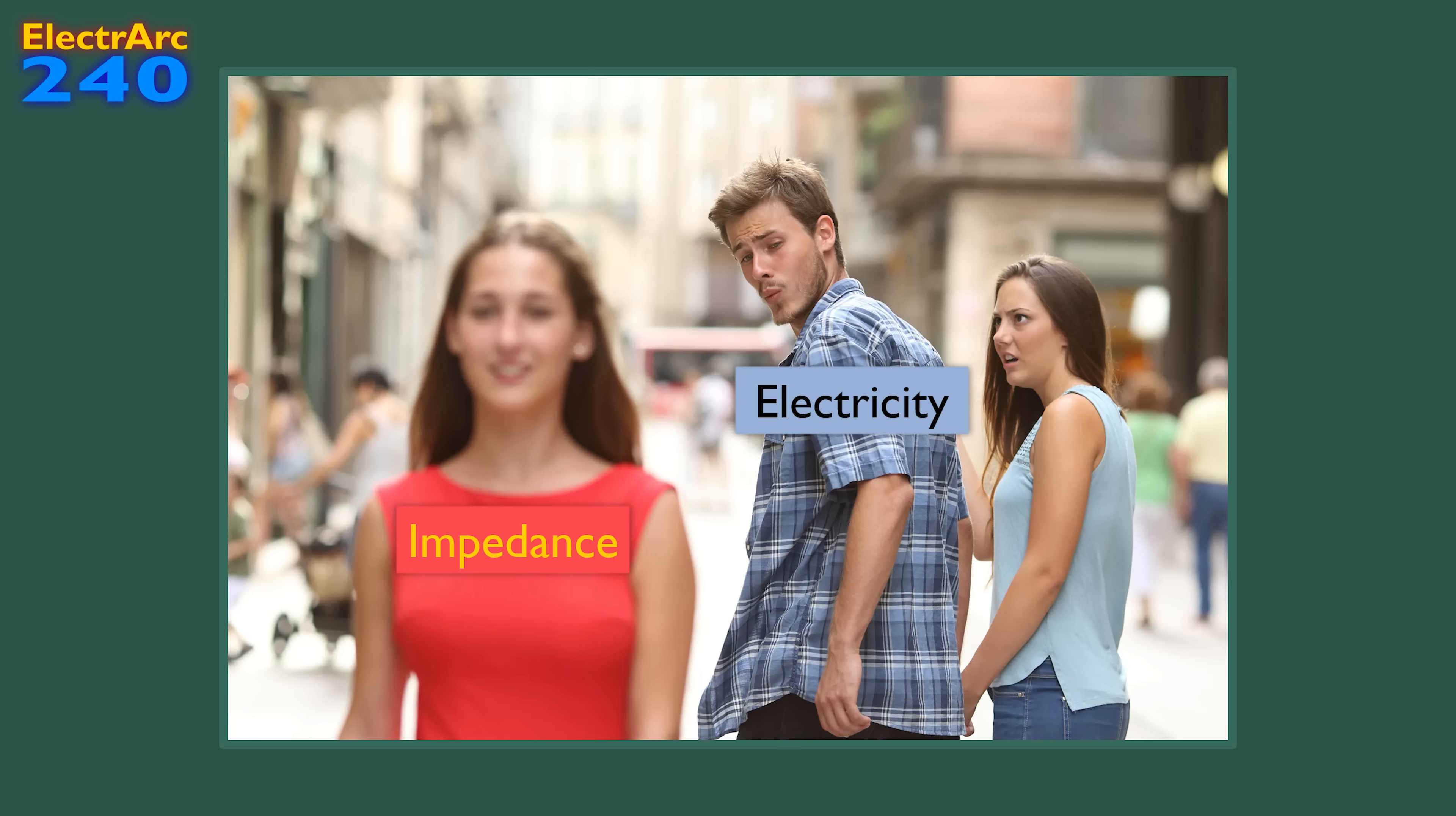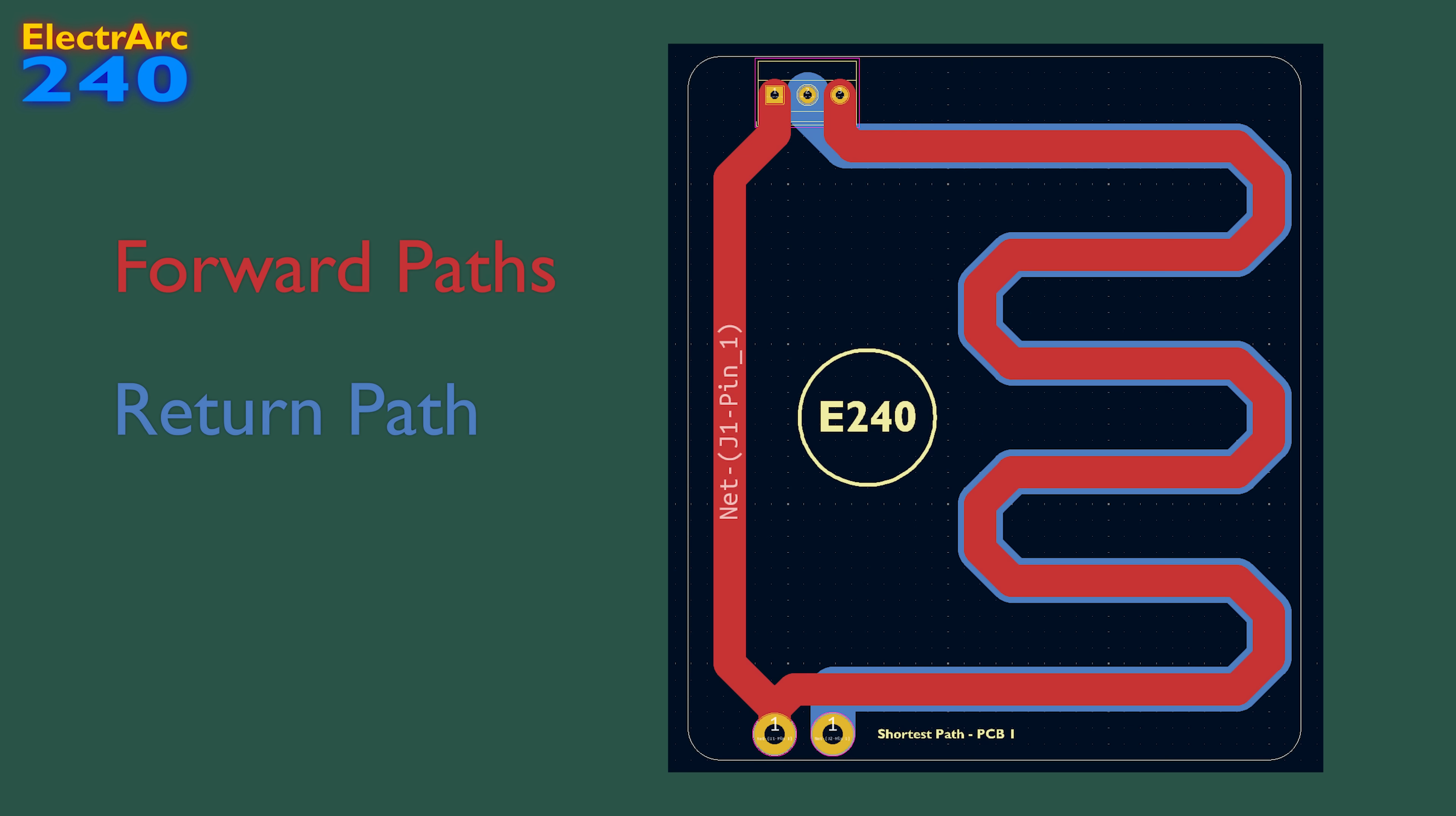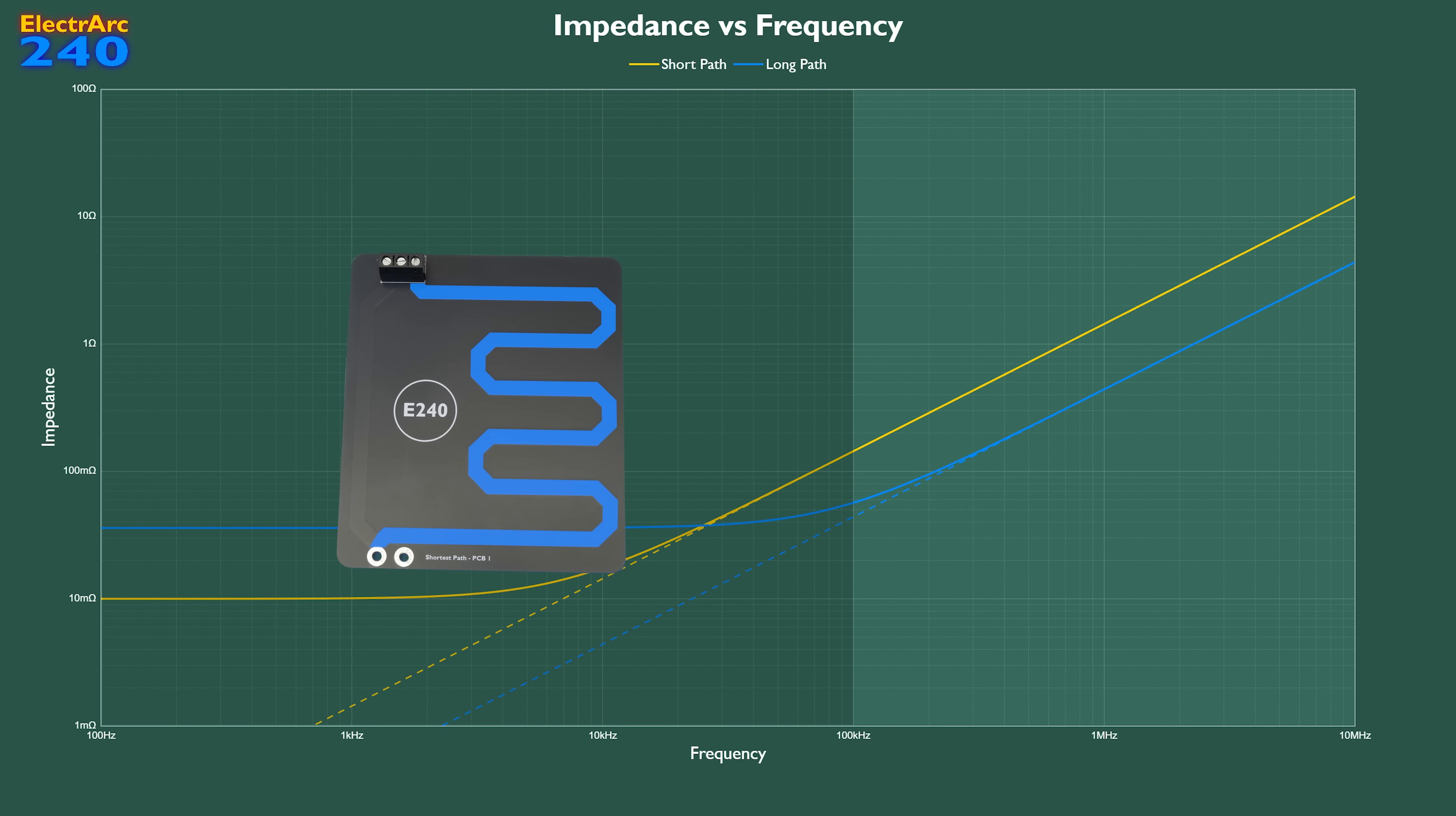So, to summarize, electricity follows the path of least impedance, not resistance, they just happen to be the same thing for DC. The short path has less resistance because it's shorter, but the long path has less inductance, because the return current follows it closely, cancelling out its magnetic field. When the frequency is low, or zero in the case of DC, the impedance is dominated by the resistance, so the easier path for the electricity to take is the short one. However, when the frequency is high, the effects of the inductance become dominant, making the longer path the easier option.